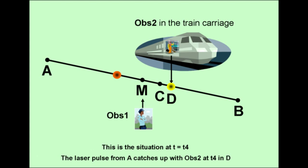Here is the situation at time instance T4, later than time instance T3. Now the laser pulse from A catches up with OBS-2, but only in location D, since OBS-2 traveled further to the right before the laser pulse could catch up. You can read further conclusions in the next slides.